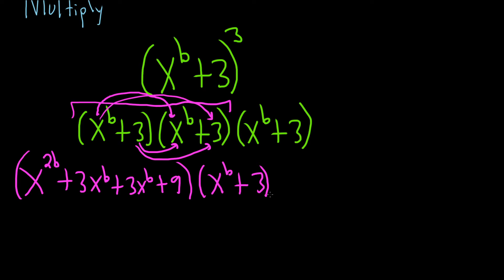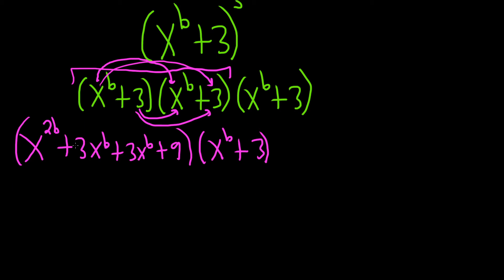It looks like we have some like terms that we can clean up. So we have x to the 2b. 3x to the b plus 3x to the b is 6x to the b. And then we have plus 9. And here we have x to the b plus 3.